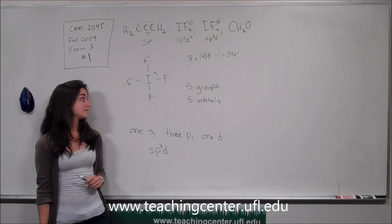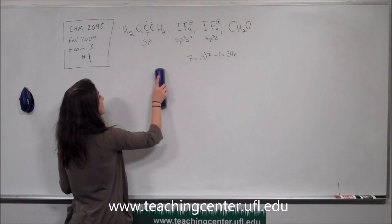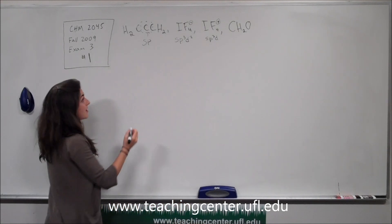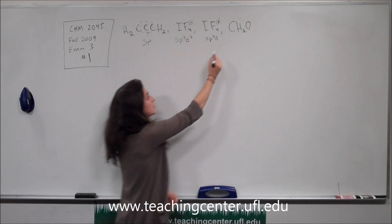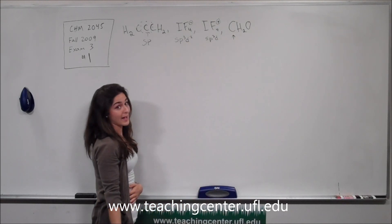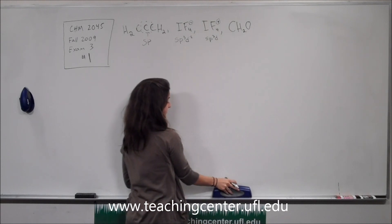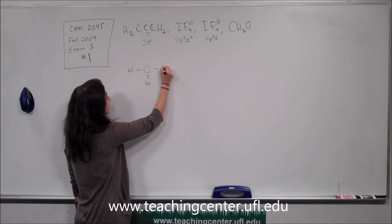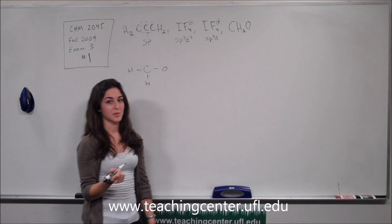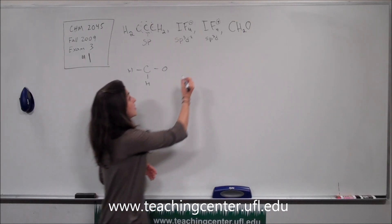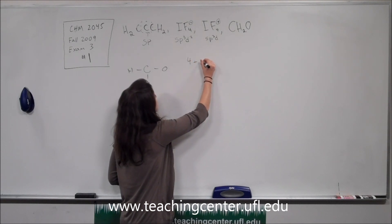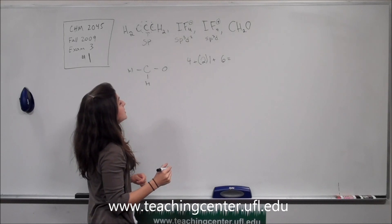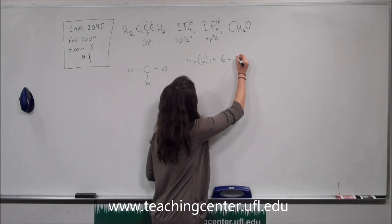So IF₄⁺ is sp³d hybridized. Now we can move on to the last one — CH₂O. This might be tricky because it's an organic molecule you'll likely see in organic chemistry. Carbon will be the central atom, as we've been told in class. Drawing this out: carbon is the central atom, with two hydrogens and one oxygen attached. We have 4 electrons from carbon, plus 2 from the two hydrogens, and 6 from oxygen, giving 12 valence electrons.